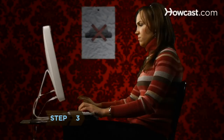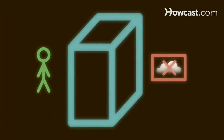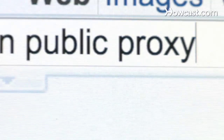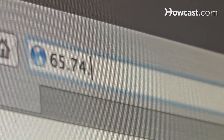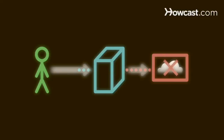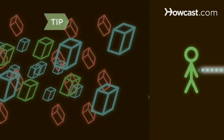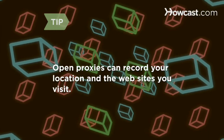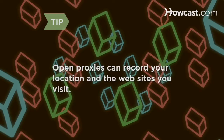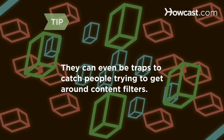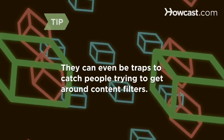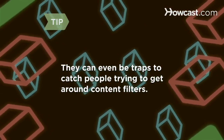Step 3: Another way to get around restrictive policies is to connect to an open public proxy server, which acts as a middleman between you and the content you request. Find one by searching for an open public proxy online, then type its IP address into your browser's network settings. Although they may not ask for personal information, open proxies are risky because they can record the location of the computer you're using and the websites you visit. Sometimes an advertised open public proxy is really a trap to catch people trying to get around content filters. If anonymous browsing is essential, this method may not be for you.